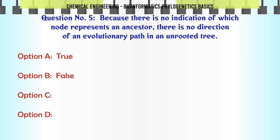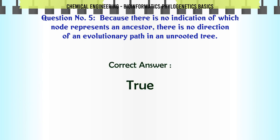Because there is no indication of which node represents an ancestor, there is no direction of an evolutionary path in an unrooted tree. a. True. b. False. The correct answer is: True.